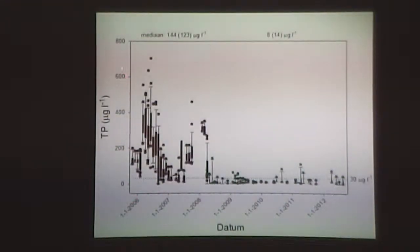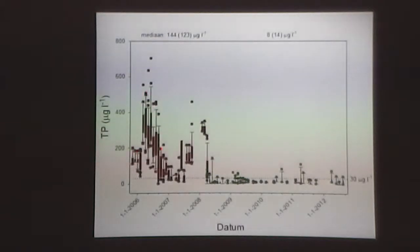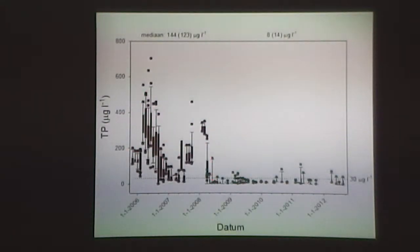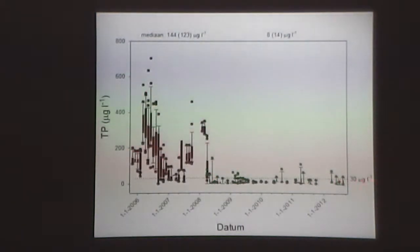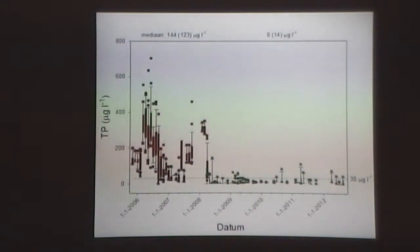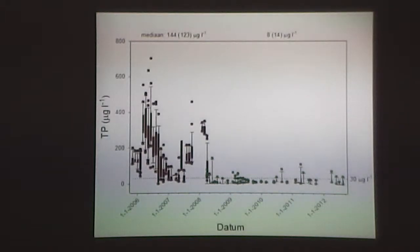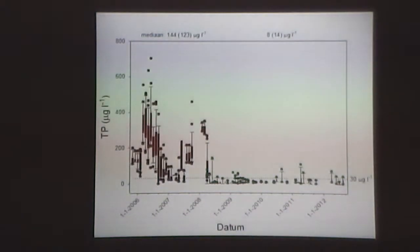These are the results of total phosphorus over time — the years before, the seasonality, and after application — and it continues until the present. So in reducing total phosphorus, this treatment was a success — because it is a big success.